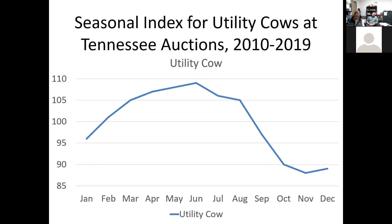The problem is a lot of these slaughter cows are marketed in the October-November time period, because that's also when we're weaning our calves. When we pull the calves off, we tend to go ahead and haul the cows off the place as well so we don't have to feed them through the winter. That doesn't mean that's not the correct decision in some instances, but I'll talk about some alternatives that might be more advantageous from a profitability standpoint.